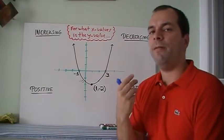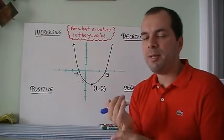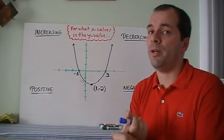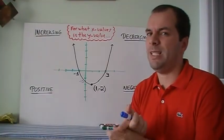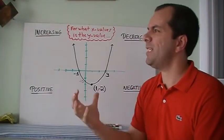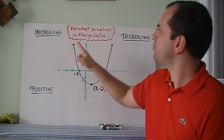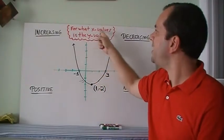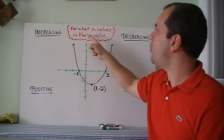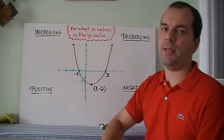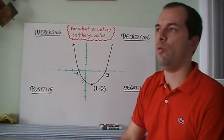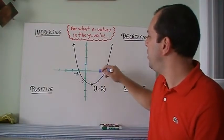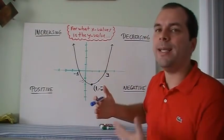We're talking about functions when they're increasing, decreasing, when are they positive and when are they negative. It's pretty simple, but it gets confusing. Let me ask it this way: for what x values is the y value increasing? When I plug in my x and I get my y values, when is it increasing?